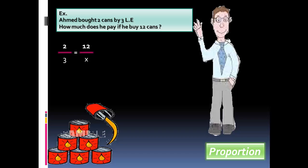2 over 3 equals 12 over x. x equals 3 times 12 over 2, equals 18 LE.